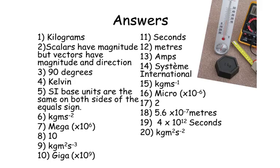Number ten: giga. Number eleven: seconds. Number twelve: meters. Number thirteen: amps. Number fourteen: Système International. Number fifteen: kilogram meters per second. Number sixteen: micro. Number seventeen: two. Number eighteen: 5.6 times ten to the minus seven meters. Number nineteen: four times ten to the twelve seconds. And number twenty: kilogram meters squared s to the minus two. Okay guys, how did you do? Bye for now.